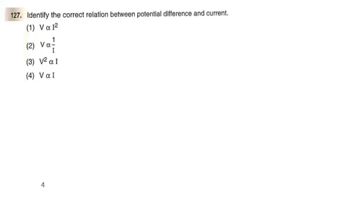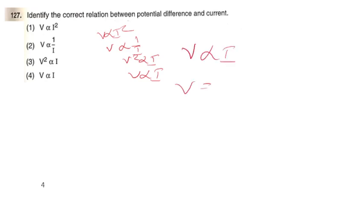Next question: Identify the correct relationship between potential difference and current. Options: V directly proportional to I squared; V inversely proportional to I; V squared directly proportional to I; V directly proportional to I. By Ohm's law, V equals IR, so V is directly proportional to I. The correct option is option 4.